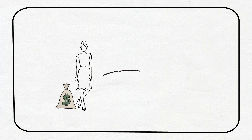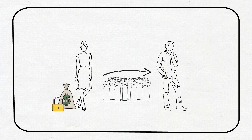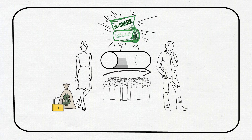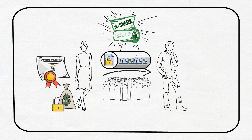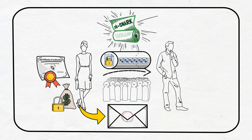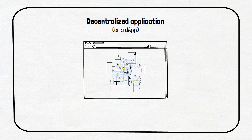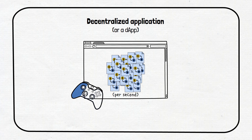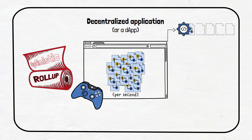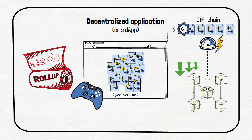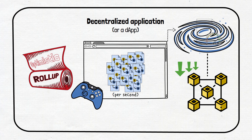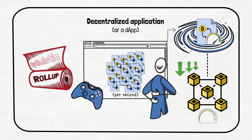Let's visualize these concepts with a couple of scenarios. Imagine Anna wants to send funds to Zach without revealing the transaction amount to the public — here's where ZK snarks shine. Using a ZK rollup, Anna can bundle her transaction with others, keeping the amount hidden from prying eyes while proving its legitimacy cryptographically. It's like sending a sealed envelope where only the recipient can see what's inside. Now picture a decentralized application, or dApp, handling a massive number of transactions per second, like a popular gaming platform. Optimistic rollups step in here, allowing the dApp to process transactions off-chain rapidly at lightning speed, minimizing congestion on the main chain — like a parallel universe where transactions happen swiftly, ensuring seamless gameplay.